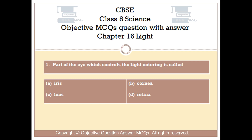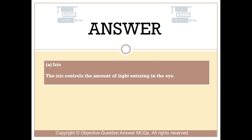Question number 1: The part of the eye which controls the light entering is called. Option A: iris. Option B: cornea. Option C: lens. Option D: retina. The right answer is option A — iris. The iris controls the amount of light entering the eye.